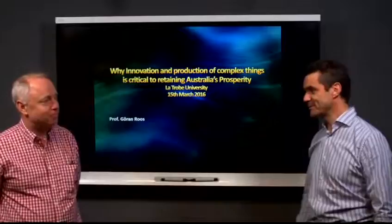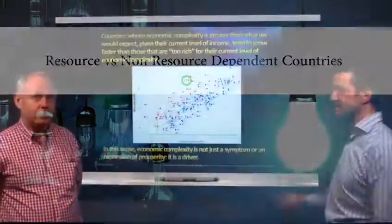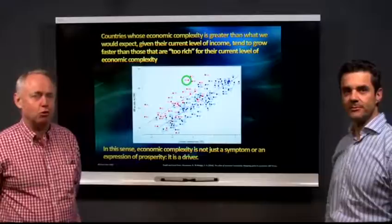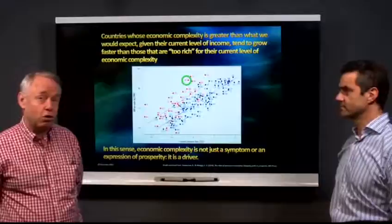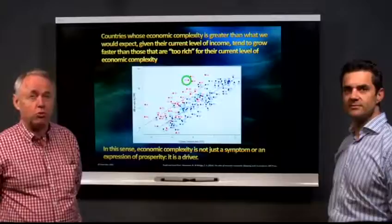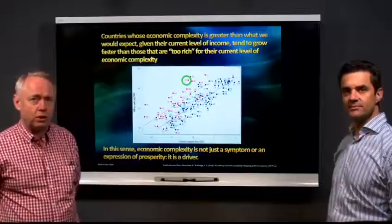Thank you for taking the time for coming out to our beautiful Pandora campus. If you could just give us a summary of what is being depicted here. When you look at that slide you see a sequence of dots. They have two colours and each dot represents a country. The blue dots are countries that are non-resource dependent and the red dots are countries that are resource dependent.